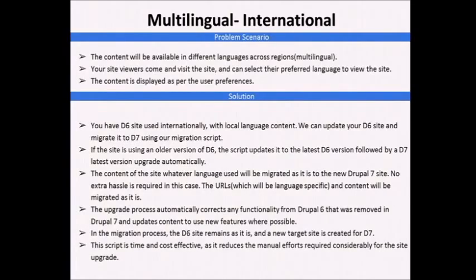Multilingual, multi-international site: content coming from different languages, users can select their preferred language to view the site. In that scenario also we can use the script — it will take your D6 site, upgrade it to the latest version to D7. To be honest, the script is not magic. It does the manual steps required for D6 to D7, and if any issues remain in your D7 site, you still have to resolve them. But the manual process is automated.